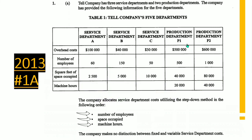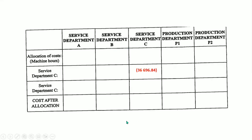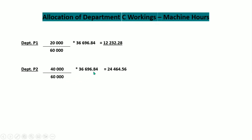For P1: 20,000/60,000 × $36,696.84 = $12,232.28. For P2: 40,000/60,000 × $36,696.84 = $24,464.56. Let's record both of those in the worksheet.